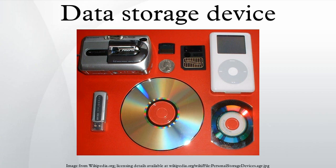Electromagnetic data may be stored in either an analog or digital data format on a variety of media. This type of data is considered to be electronically encoded data, whether or not it is electronically stored in a semiconductor device, for it is certain that a semiconductor device was used to record it on its medium. Most electronically processed data storage media are considered permanent storage — that is, the data will remain stored when power is removed from the device. In contrast, most electronically stored information within most types of semiconductor microcircuits are volatile memory, for it vanishes if power is removed.